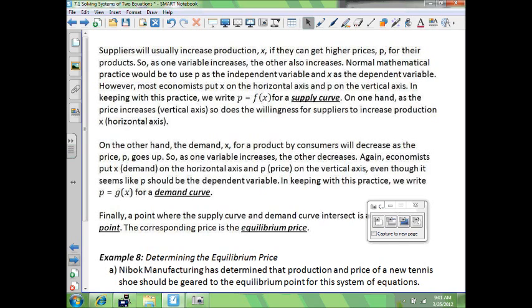Economists put X demand on the horizontal axis and P, which is the price on the vertical axis, even though it seems like P should be the dependent variable. In keeping with this practice, we can write P equals G of X for a demand curve. Finally, a point where the supply and demand curve intersect is an equilibrium point and the corresponding price is the equilibrium price.